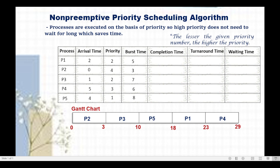We can now determine the completion time of each process. P1's completion time is 23. P2's completion time is 3. P3's completion time is 10. P4's completion time is 29. And P5's completion time is 18.